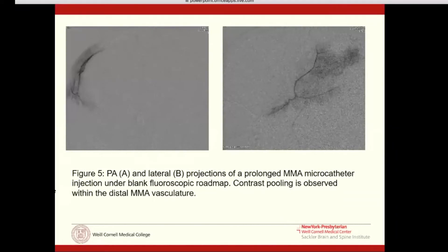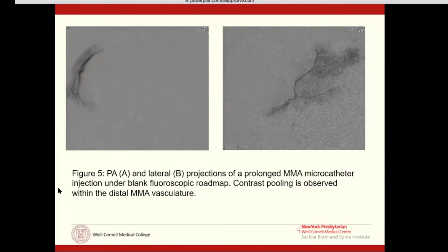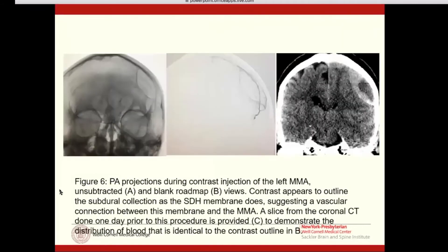Here is an example of what the images look like — on the left AP and on the right lateral — after we've injected PVA particles, which sit in contrast. What you see is the contrast pooling within the subdural hematoma shape itself. This is more radiographic evidence that there's an arterial connection between these arteries and the subdural hematoma, which we've always felt was a venous pathology.